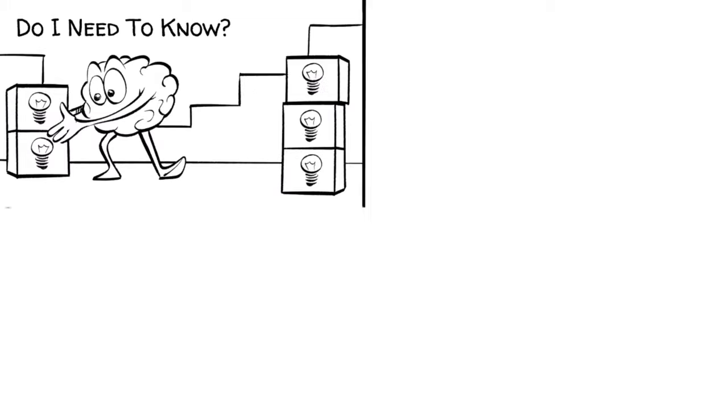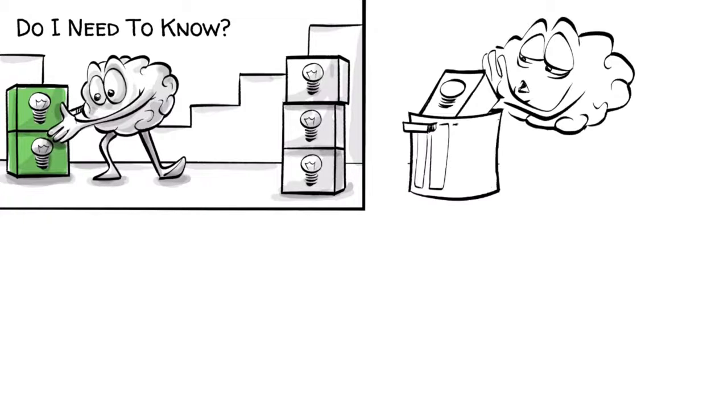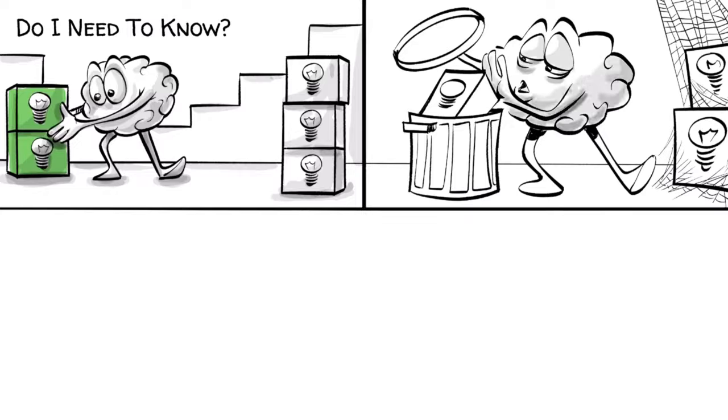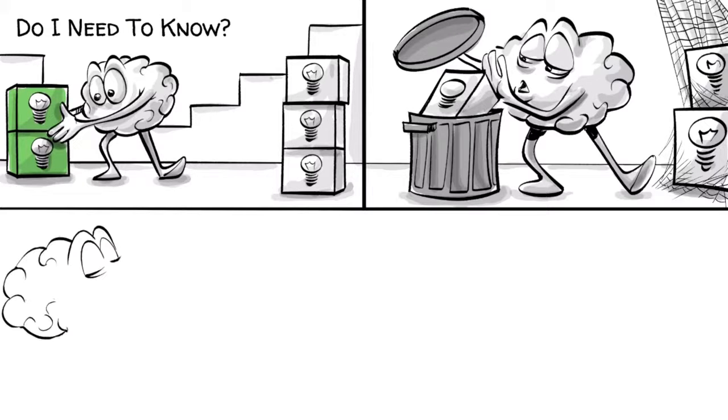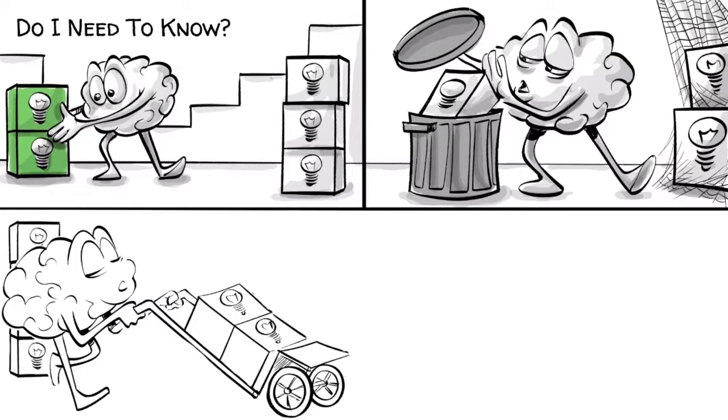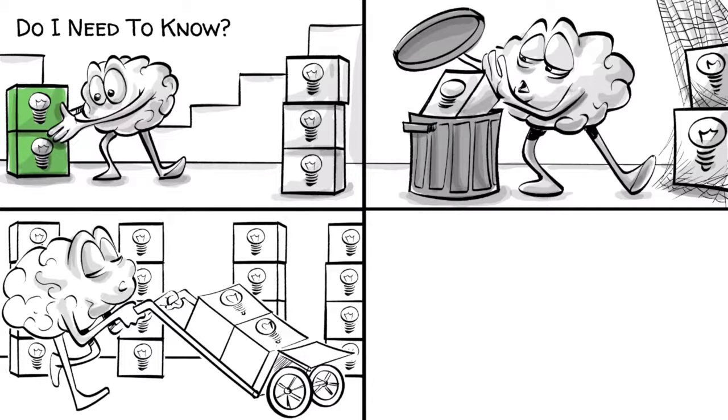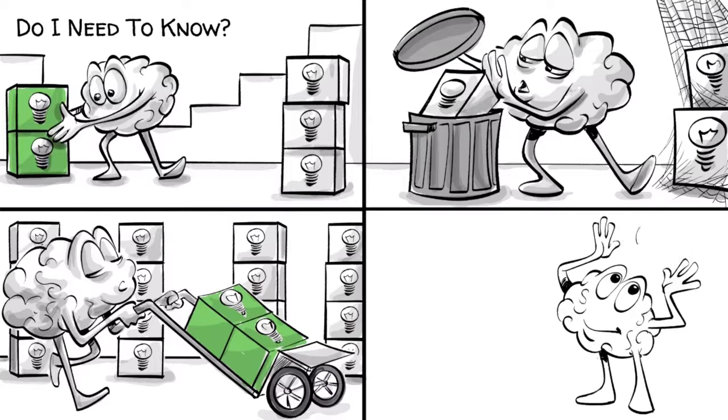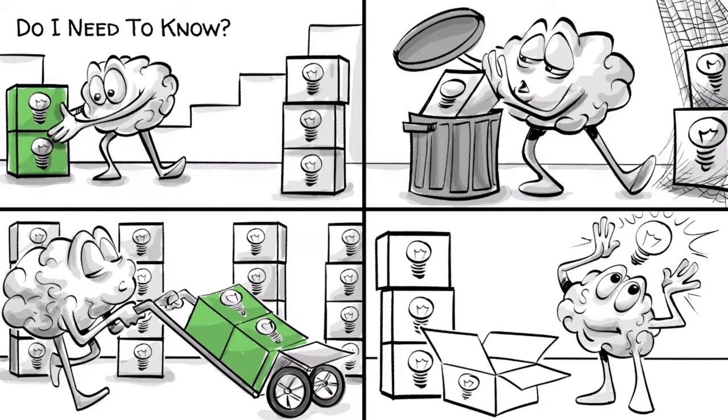When we ask ourselves, do I need to know, our brain separates between the material it finds worth to remember and the one it can forget. If it's unlikely that new information will ever be used again, the brain is smart enough to throw it away. If your brain finds that the information is needed again, say it could increase your social status, the brain will store it in long-term memory. To stay there and be easily recalled, you just have to periodically use or think of it.